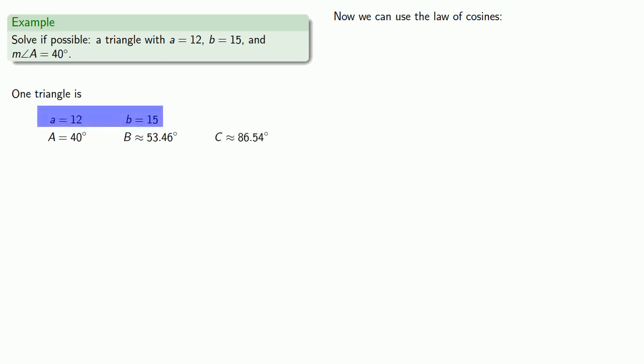Now, we have two sides and a bunch of angles, so we can use the law of cosines to find the third side. And we get one solution.